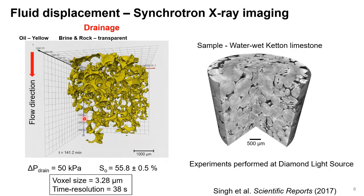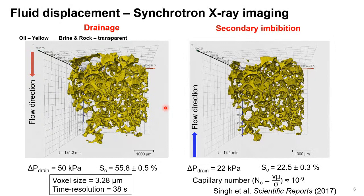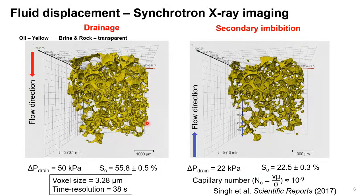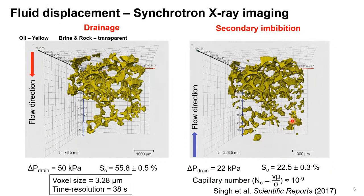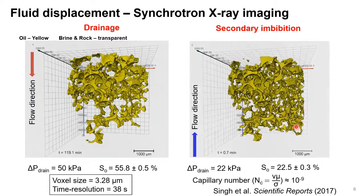We were interested in the imbibition process — when you reverse the whole process and start injecting water from the base. We are only showing oil here; the water and rock are transparent. You can clearly see the difference between drainage and imbibition: we don't see big jumps anymore, and we see some trapping. It's an irreversible process — the processes are now controlled by pore sizes, moving from one pore to the other.